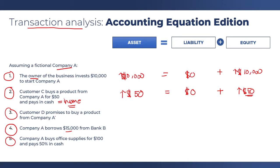The third one: customer D promises to buy a product from company A. Since this is still a promise, it has no effect on the accounting equation. This is an example of when a transaction does not have an economic effect to trigger an entry. This can have a future effect when customer D finally buys the product, but as long as it remains a promise and no contract has been executed, it will never have an effect on the accounting equation.